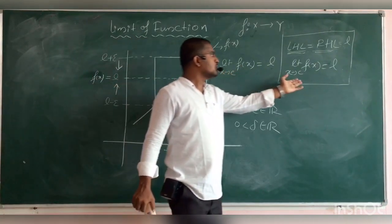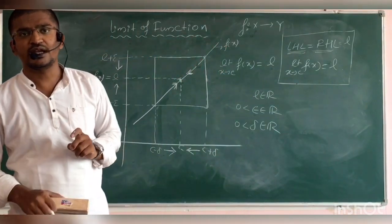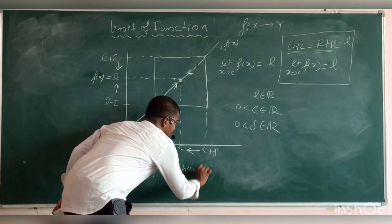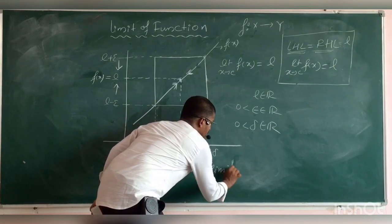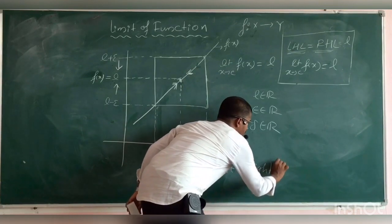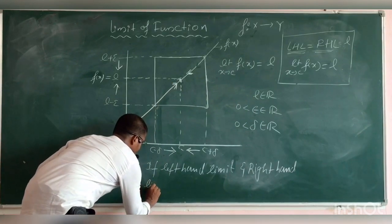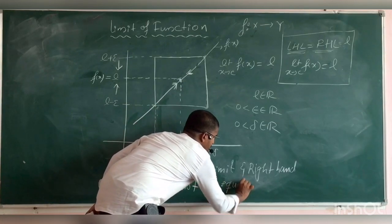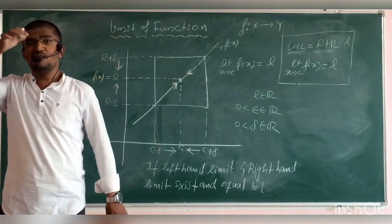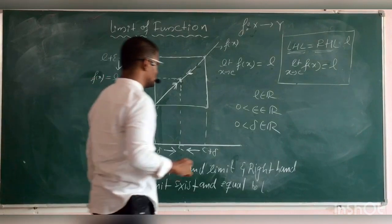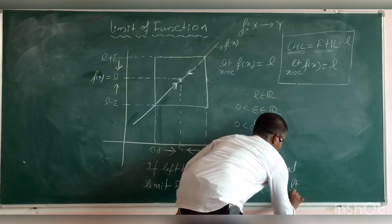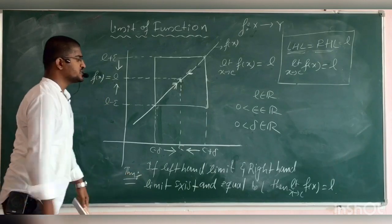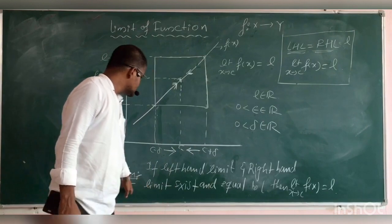So the formal way uses the graph and exact definition. There is one theorem: if the left hand limit and right hand limit both exist and are equal to L, then limit as X tends to C, F of X is equal to L. This is one of the theorems that we are studying in the informal way.